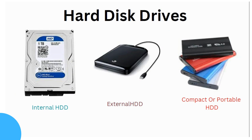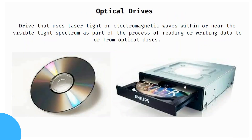Here is an example of a hard disk — a 1 TB hard disk for a desktop PC. This is an external hard disk, also known as a USB hard disk. This is a compact, portable hard disk drive.